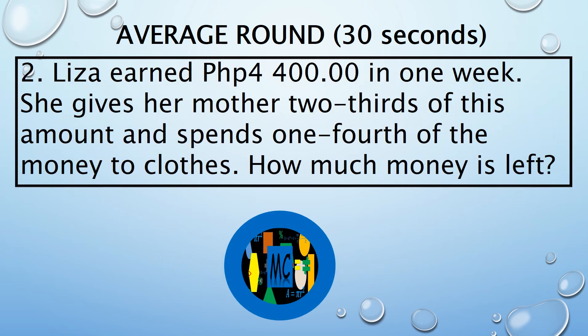Liza earned 4,400 pesos in one week. She gives her mother two-thirds of this amount and spends one-fourth of the money on clothes. How much money is left?